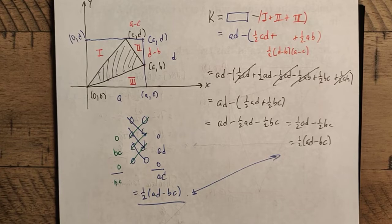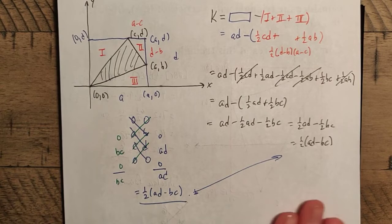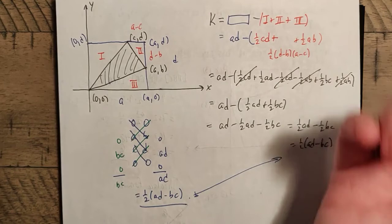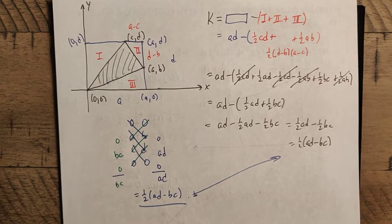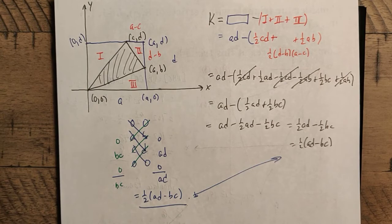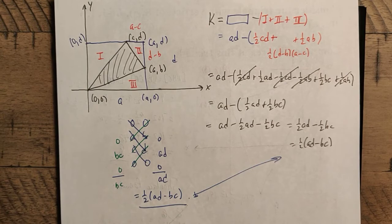This works for triangles. To show it works for everything, you can use a technique called mathematical induction. The base case is the triangle. For the inductive step: to handle quadrilaterals, divide the quadrilateral into two triangles and apply the triangle formula. To handle a pentagon, slice off a triangle and use the quadrilateral formula. You can keep going like this for any polygon, though I'll spare the full details here.